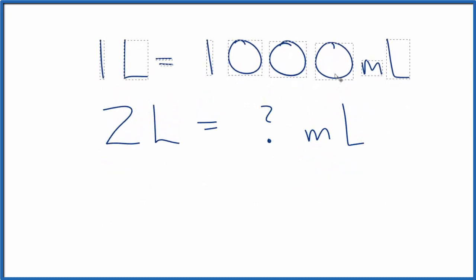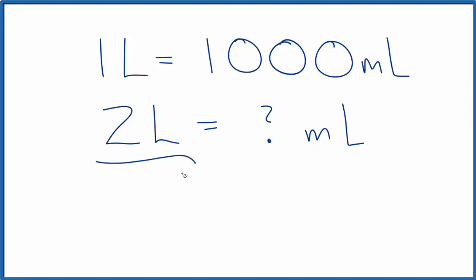If we put it up here, you can think of this like a proportion. One liter is to two liters as 1,000 milliliters is to 2,000 milliliters. But we're not always given a nice whole number like two liters. So let's see how we can work this out otherwise.